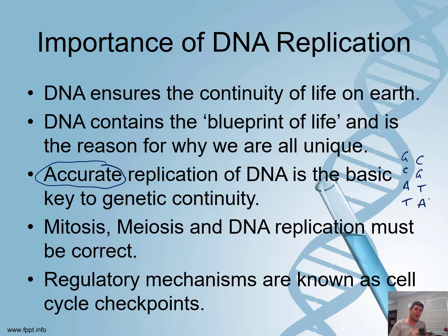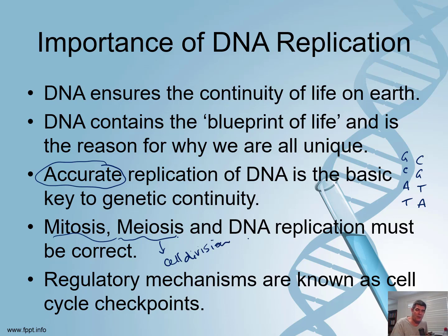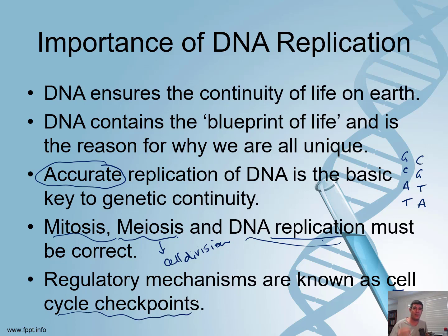We've looked at the processes of cell division — mitosis and meiosis — as two examples of cell division: one which is part of the cell cycle and one which is specifically around the creation of gametes. We've also looked at the importance of DNA replication as a key part of both of those processes. Regulatory mechanisms that are part of these processes are known as cell cycle checkpoints — places where the cell has an opportunity to proofread the coding before the next stage in the cycle occurs.